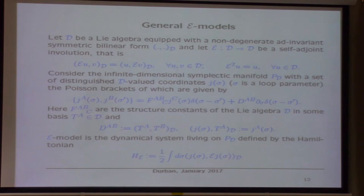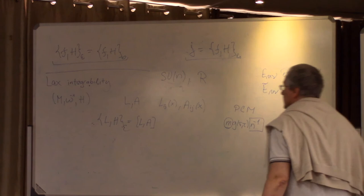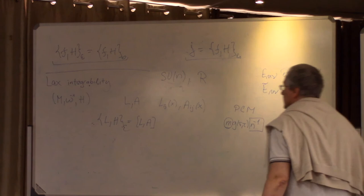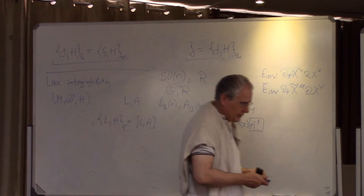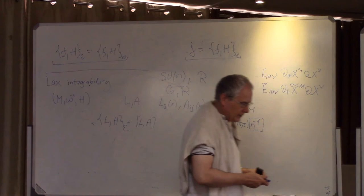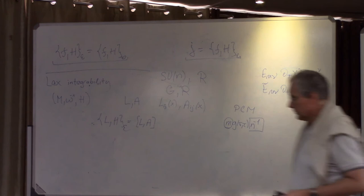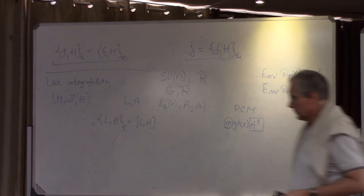Now for the general story of constructing Poisson-Li symmetric models: what I did was for the group SUN with one particular Poisson-Li structure given by the Yang-Baxter operator. The story can be done for whatever group, for whatever Yang-Baxter operator, and even for Poisson-Li structures not based on Yang-Baxter operators. Poisson-Li structures based on the Yang-Baxter operator are called coboundary; there are many other non-coboundary Poisson-Li structures from which you can also construct Poisson-Li symmetric systems.